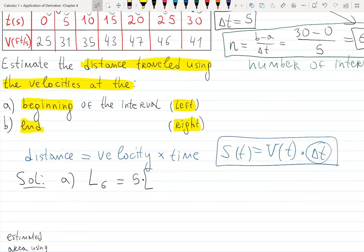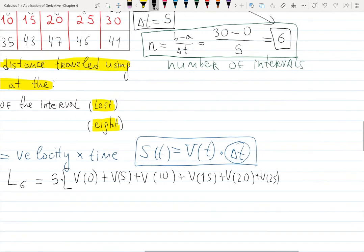If I'm using left endpoints, then I start from the left. I will have v(0) + v(5) + v(10) + v(15) + v(20) + v(25), and I skip the last one—skip v(30).